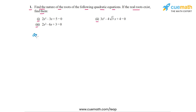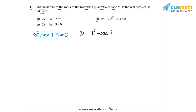Suppose that ax² + bx + c = 0 is some quadratic equation. Then this equation will have real roots only if its discriminant is non-negative. The discriminant, which is equal to b² - 4ac, if this is greater than or equal to 0, then this equation will have real roots.